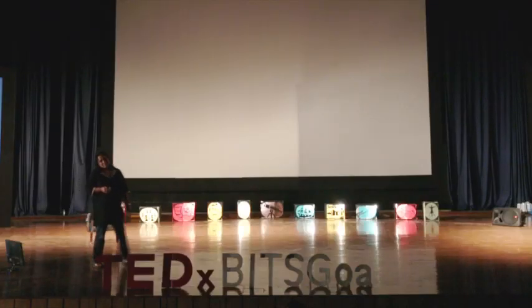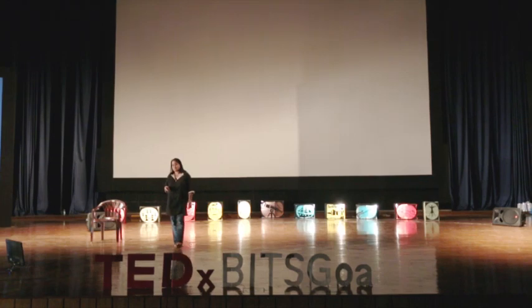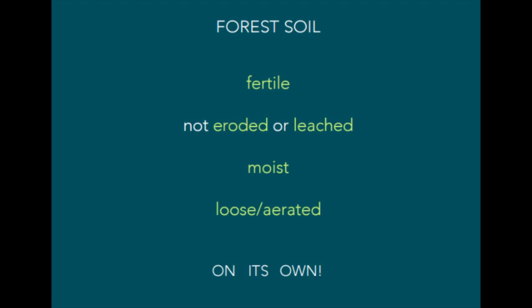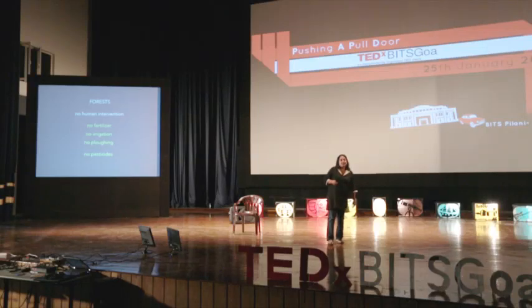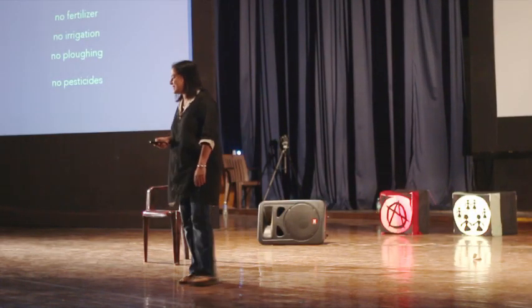To demonstrate this principle, the forest is a good example. A forest feeds a multitude of life forms without depleting its resources. When you go into a forest you find the soil is fertile — not eroded or leached — it's moist, loose, and aerated. This is on its own, with no human intervention: no fertilizing, no irrigating, no plowing, and absolutely no pesticides.